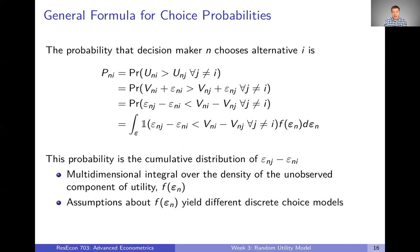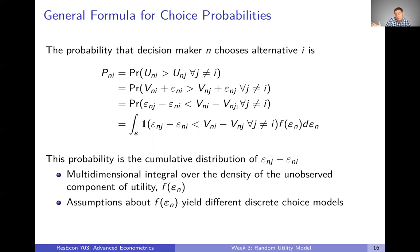Let's suppose we just had two choices, I and J, with nothing else — so we get rid of the 'for all J not equal to I.' That would implicitly be only one choice. Then what is this probability? The difference between two random variables is just a random variable itself. If we know what the representative utilities are, then what we have is the probability that some random variable is less than some number. That's a cumulative distribution — just the cumulative distribution of that random variable, which is the difference of these two other random variables.